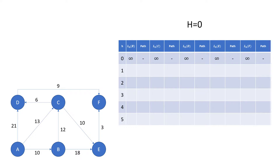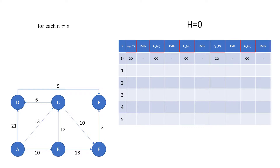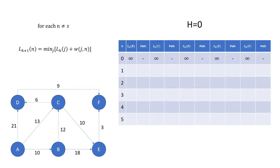We now need to start iterating through values of h, starting with 0. The first statement we are given is for each n not equal to s. This simply means we are performing this calculation for all nodes other than the starting node. Given we have not included the starting node in this table, it means we'll apply to all nodes in the table. We're then given the equation Lh plus 1 of n equals minimum j from Lh of j plus w of j and n.